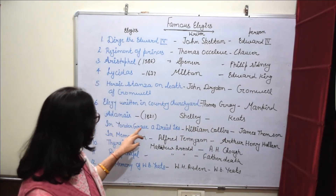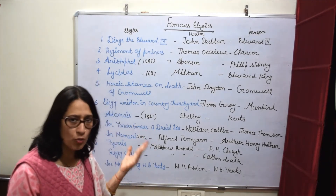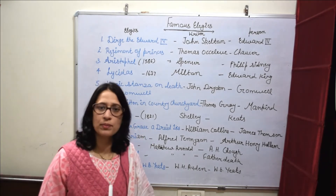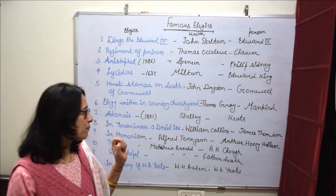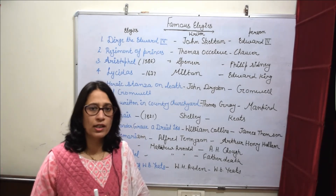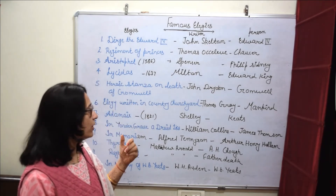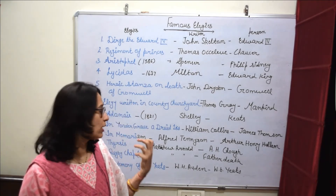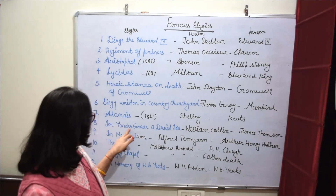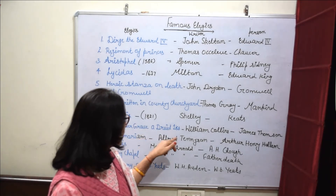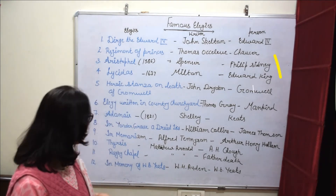इसके बाद आता है In Yonder Grave a Druid Lies। ऊपर वाली elegies शायद सुनी होंगी, लेकिन यह बिल्कुल नई है — इसे भी नोट डाउन करें, क्योंकि काफी बार देखा गया है कि एक ऐसी elegy आ जाती है जो हमने नहीं सुनी होती। तो please note it down: In Yonder Grave a Druid Lies, William Collins द्वारा — James Thomson की death के ऊपर लिखी गई है।